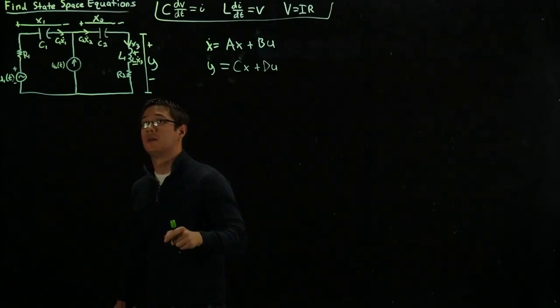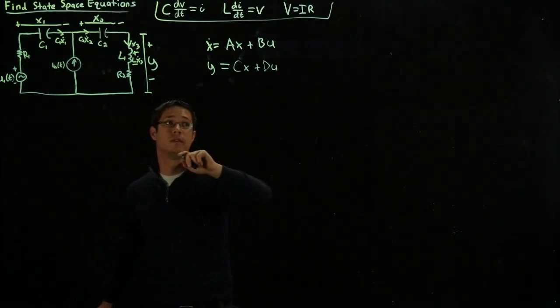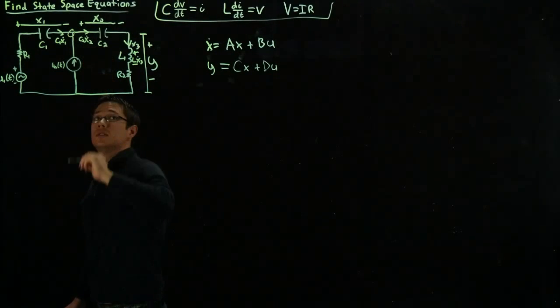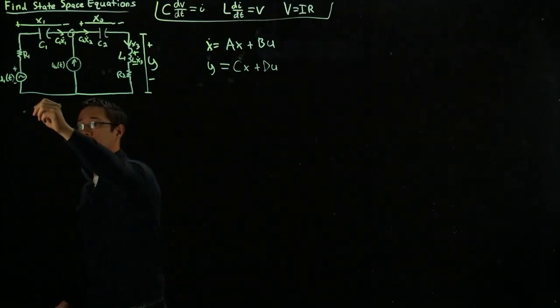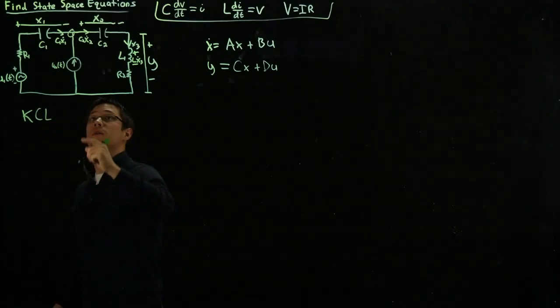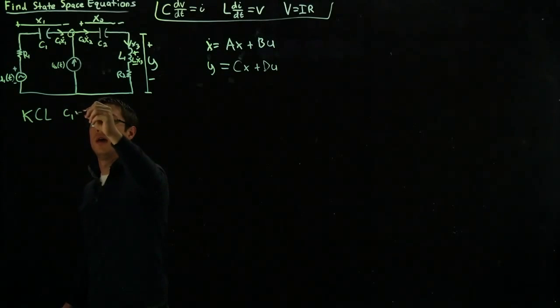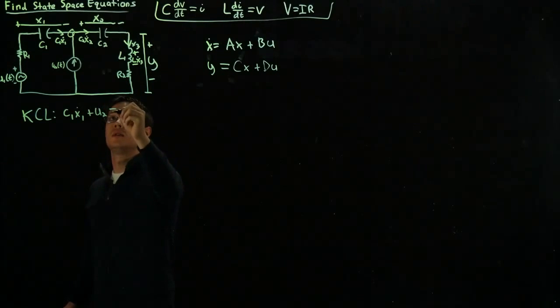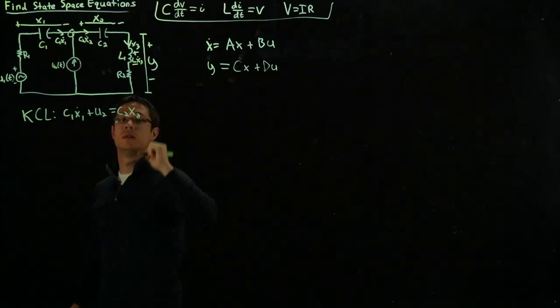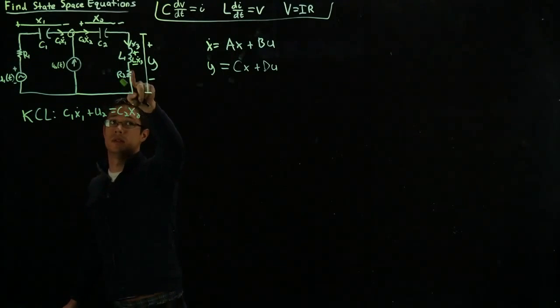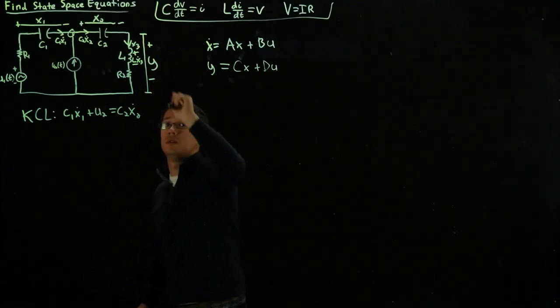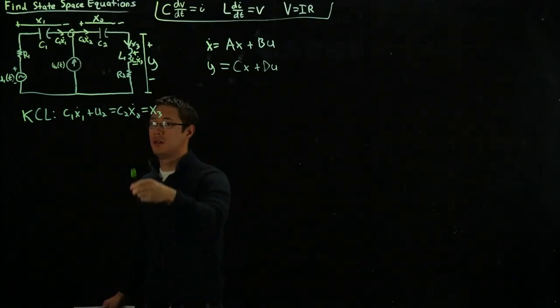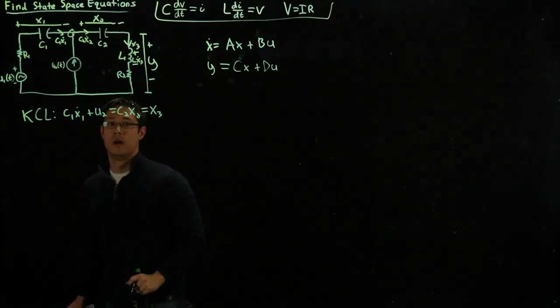First, the simplest thing I want to solve for is writing an equation for x1 dot in terms of x or the input u. If we look at this node here, we can simply write KCL directly. We have C1 x1 dot plus U2 equals C2 x2 dot. But observe that in this branch here, C2 x2 dot equals x3 because the current is the same everywhere in the same branch. So we can immediately get two of our state equations from this one simple formula.